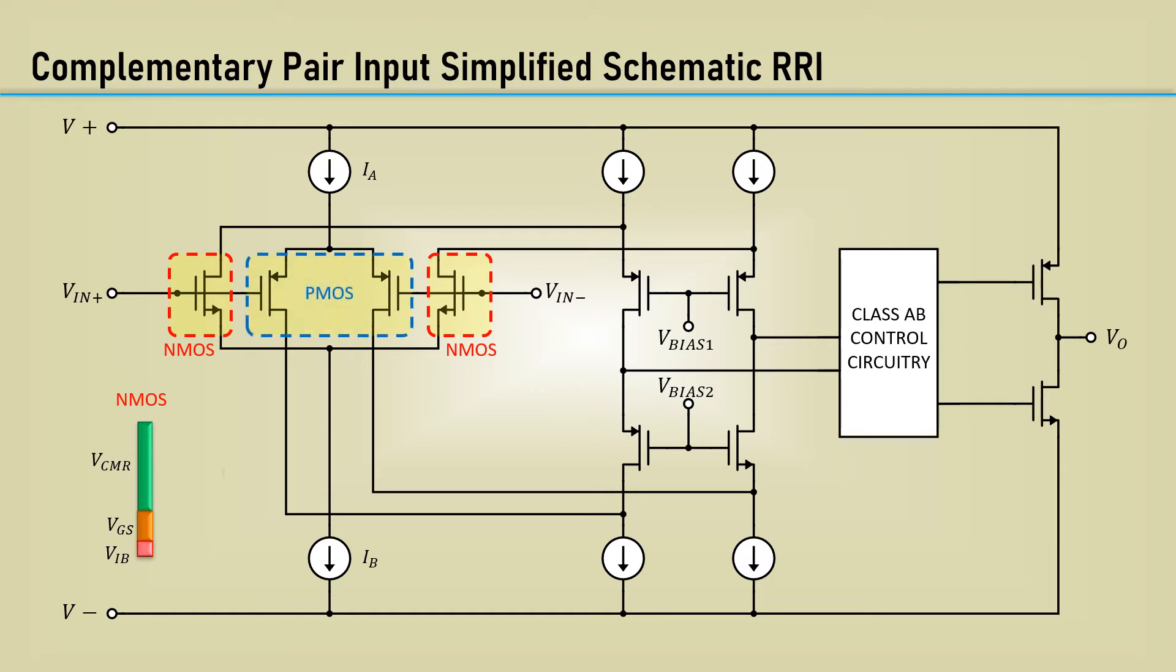The complementary pair of PMOS transistors covers the range between its VGS threshold and the drop across the current source, IA.